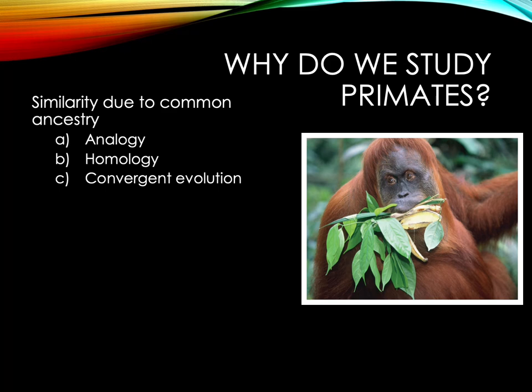In biology, homology is the existence of shared ancestry between a pair of structures or genes in different taxa. We are primates, so the reason gorillas and baboons are both quadrupedal is because they both descended from a quadrupedal ancestor.